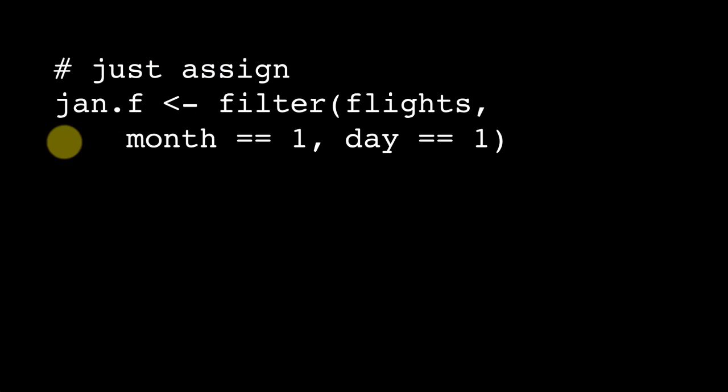Now this tibble called jan.f contains the rows which satisfy this condition. Nothing is printed on the console. As you already know, in R, when you assign something to a variable, then nothing gets printed out. Sometimes we may want to assign the value and also print it.